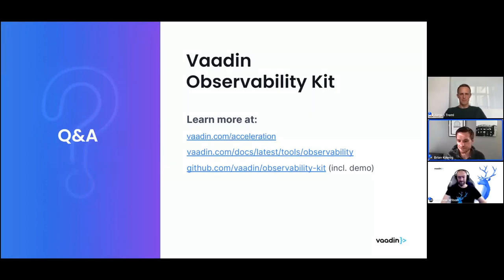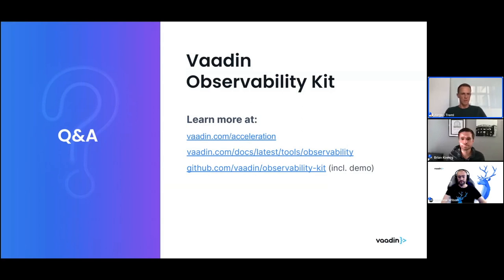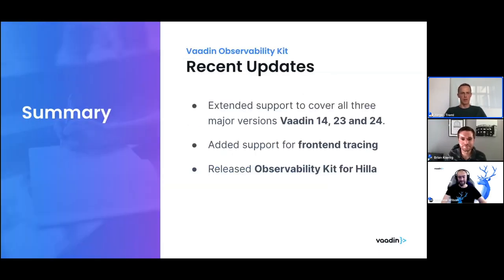We have a few questions. The first: can we observe front-end events like browser JavaScript exceptions, and can we collect user agent data? Especially the first part was exactly what we saw in the screencast and in demo one, where the exception was happening on the browser/client side — a JavaScript exception. Yes, as of the latest version of Observability Kit, those are supported and show up in your traces. Another question: from which version of Vaadin is this available? It's Vaadin 14, 23, and 24 which it is compatible with.